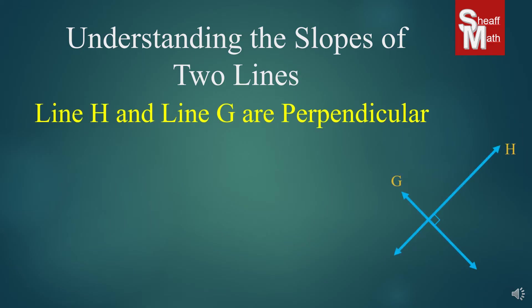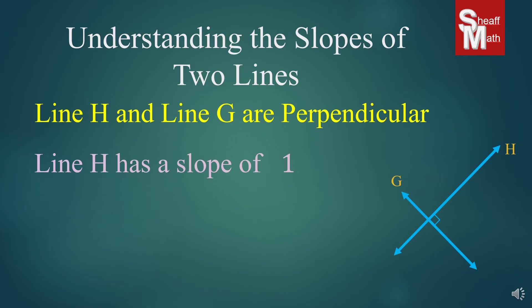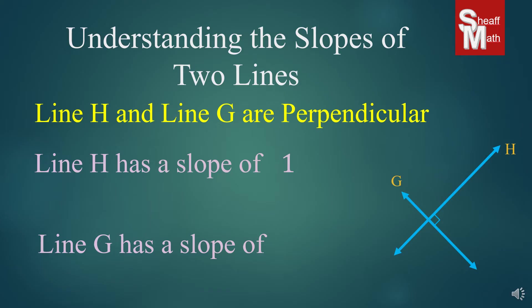Let's take a look at another one. We have line H and line G. Line H has a slope of 1, and I did this one on purpose because 1 always tricks people. To find the opposite reciprocal, we know it's going to be negative, but 1/1 flipped is still 1/1, so the answer is negative 1. This is the only number where there's no visible sign of a flip — the 1/1 flips to the same thing, so the opposite reciprocal is negative 1.